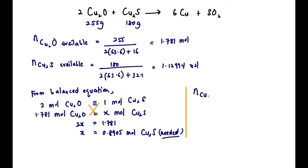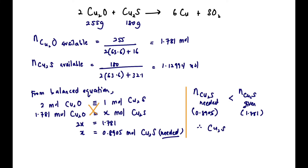Next, compare mole Cu₂S needed versus mole Cu₂S given. Needed = 0.8905 mol, given = 1.2994 mol. Since given is more than needed, Cu₂S is the excess reactant, and by default Cu₂O is the limiting reactant.